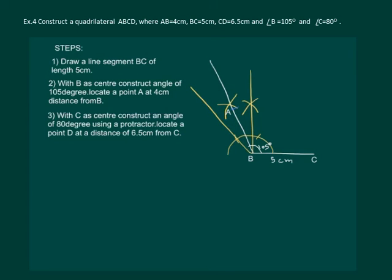The next step is to construct an angle of 80 degrees at C. To construct an angle of 80 degrees, we can use a protractor from our geometry box.